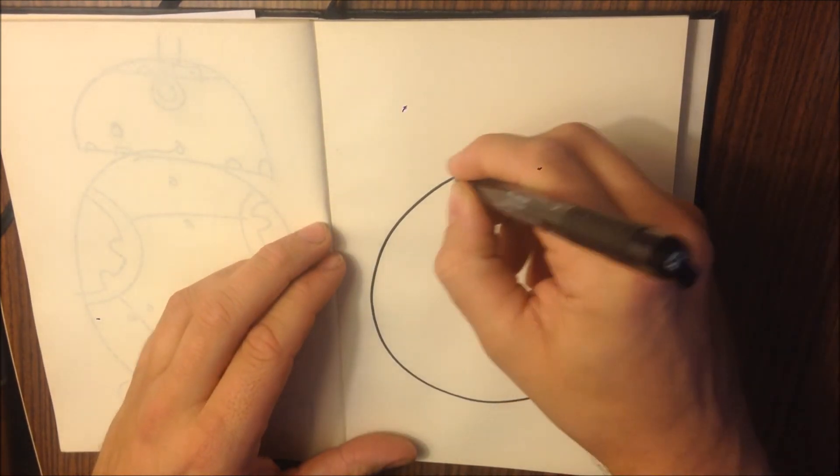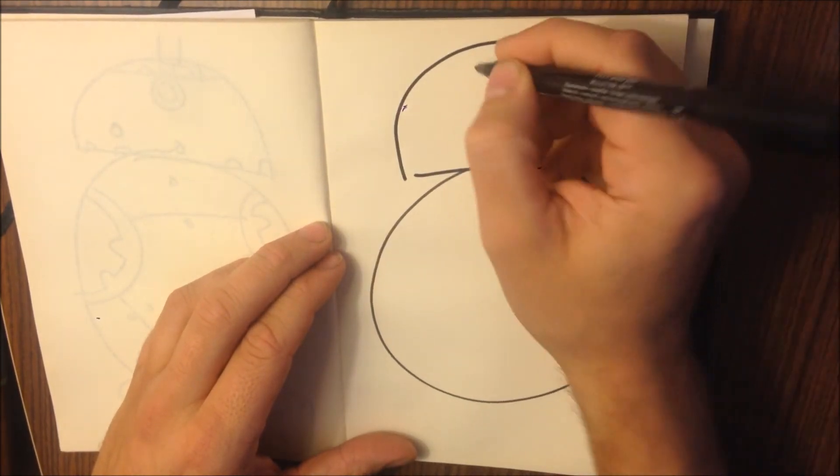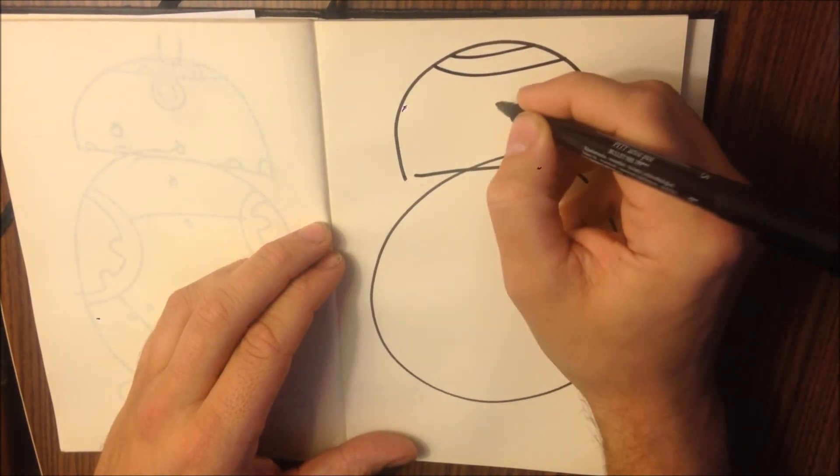So, big circular body, funny little head. Let's do his bandana first this time.